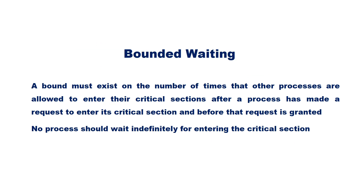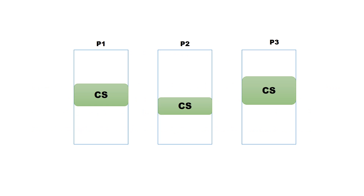The third requirement is bounded waiting. A bound must exist on the number of times that other processes are allowed to enter the critical section after a process has made a request to enter its critical section and before that request is granted. That means no process should wait indefinitely for entering the critical section. If P1 and P2 keep alternating access while P3 waits, this can go on indefinitely, leading to a situation where P3 is blocked from entering the critical section indefinitely. The bounded waiting condition should be satisfied to prevent such a situation.